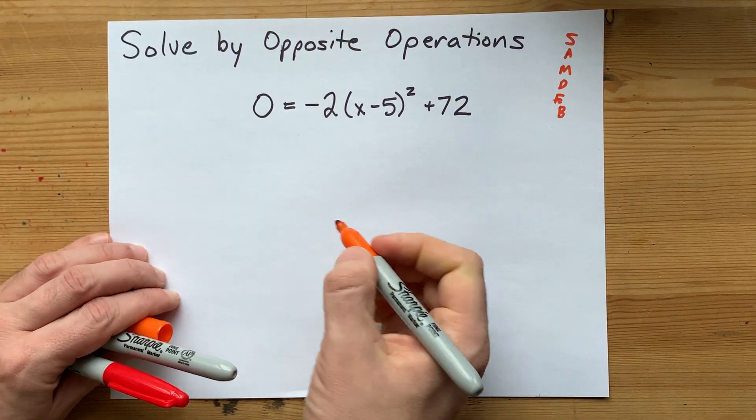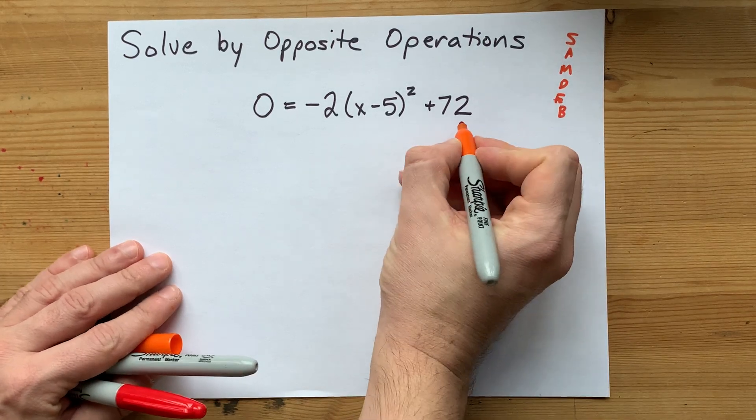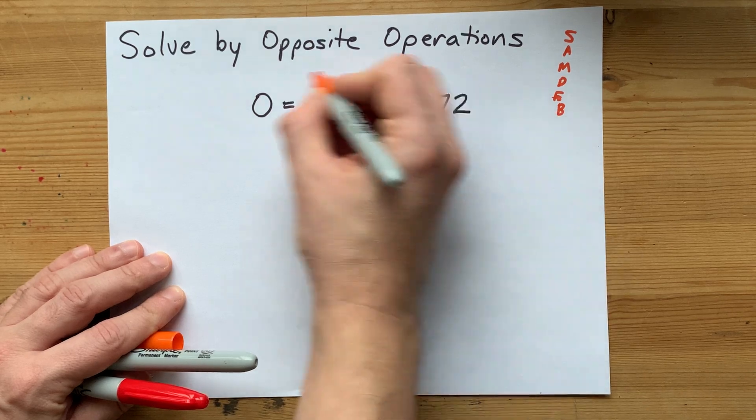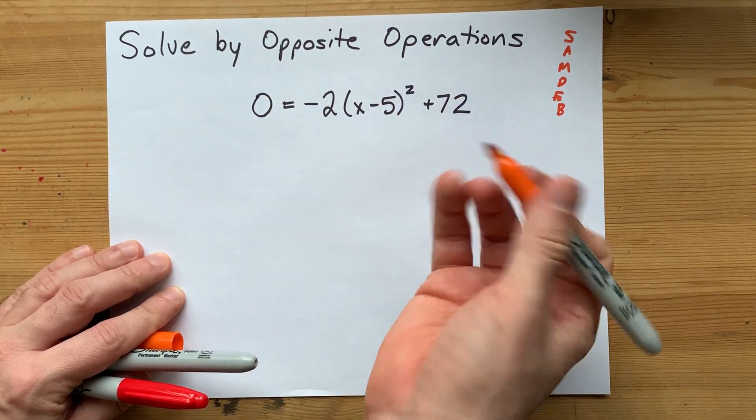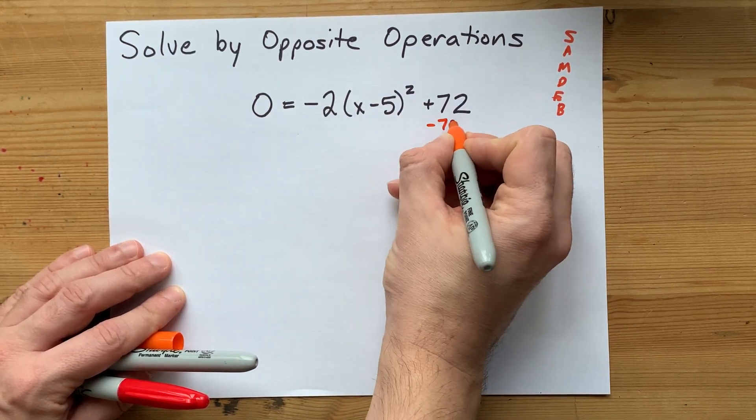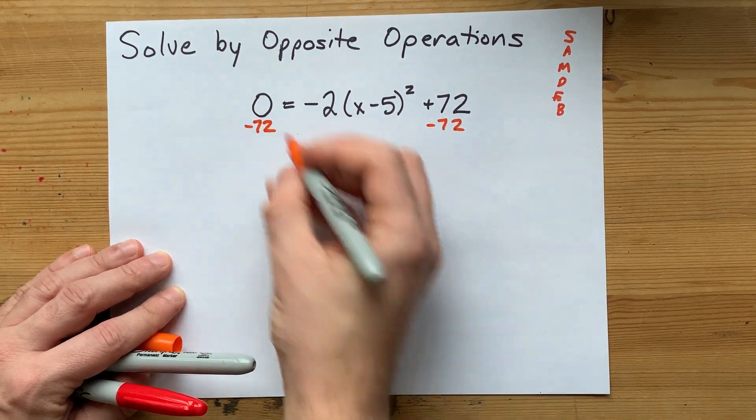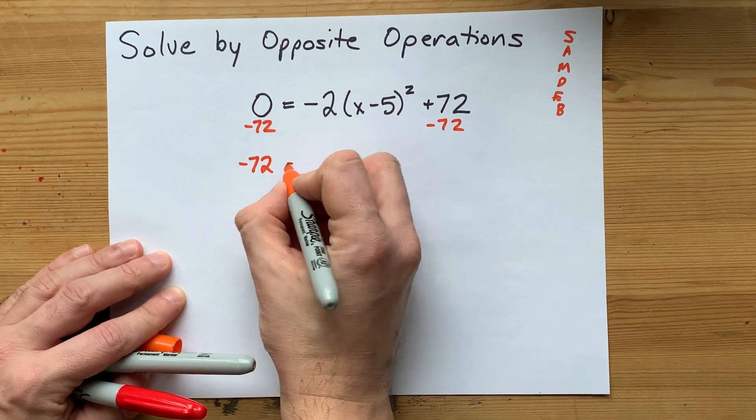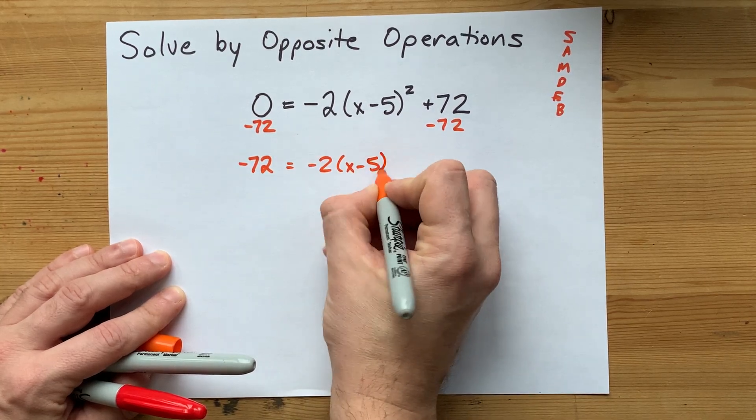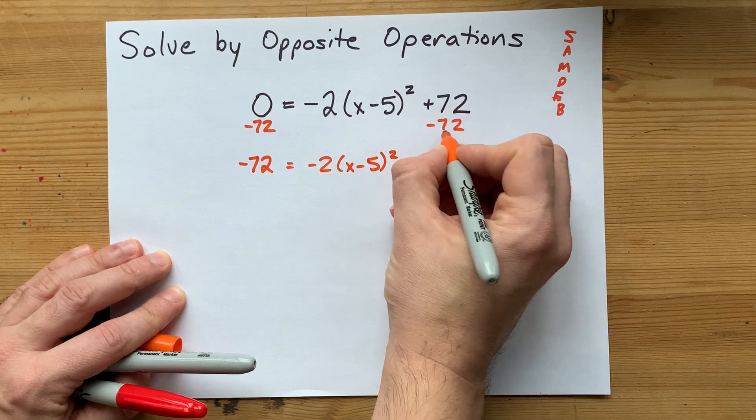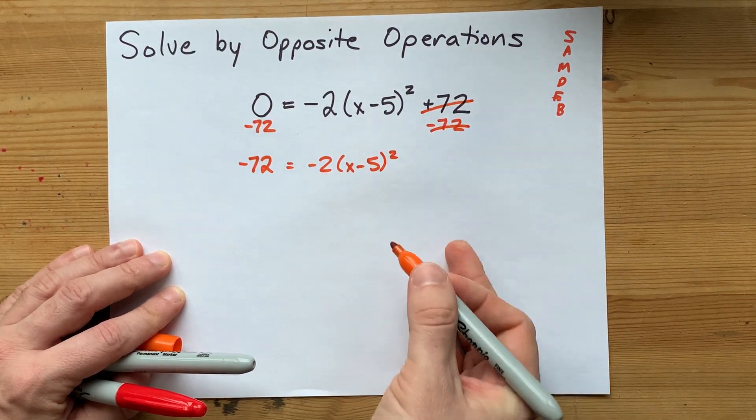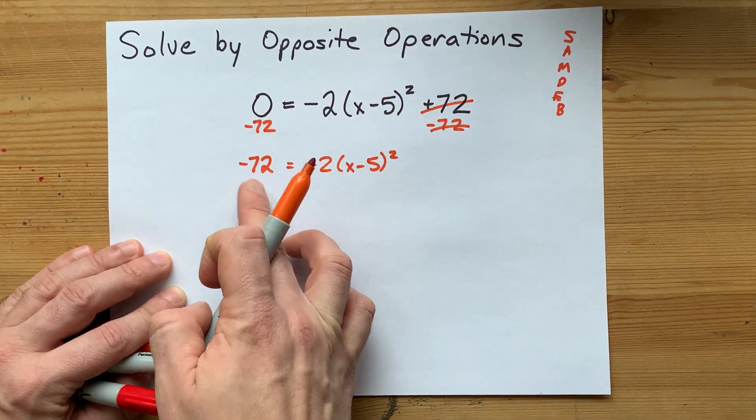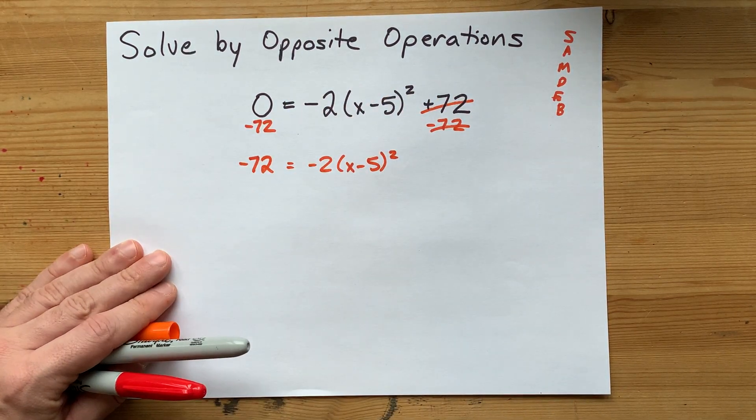We've got to undo subtraction and addition first. How do you undo adding 72? Well, the answer is by subtracting 72 from both sides. Some teachers will have you write minus 72 for both. 0 minus 72 is negative 72 over here. All of this stays the same until you get here. Plus 72 and minus 72 undo each other. So the effect is that plus 72 on the right has become minus 72 on the left.